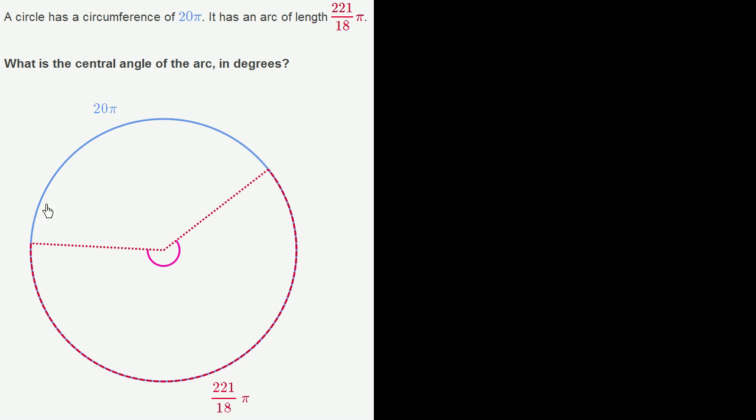A circle has a circumference of 20π. It has an arc length of 221 over 18π. What is the central angle of the arc in degrees?